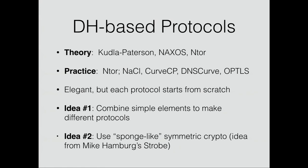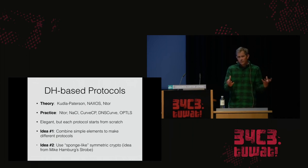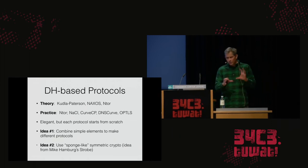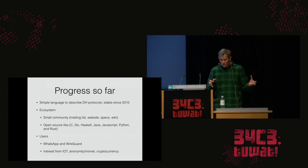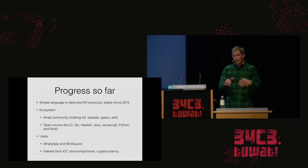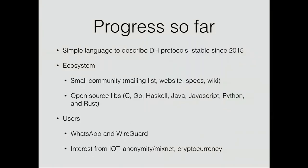The motivating idea for Noise was whether we could capture that work into a framework that provided common elements so people could easily combine them to create a wide range of different protocols. I started working on ways of connecting protocol pieces together, eventually talked to Mike Hamburg who was working on his Strobe protocol framework based on sponge-based cryptography, and we took some ideas from that. With all those ideas we arrived at a pretty good system by 2015, and it's been stable since then.